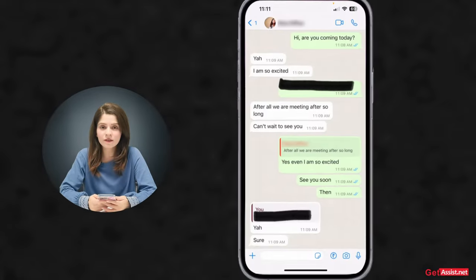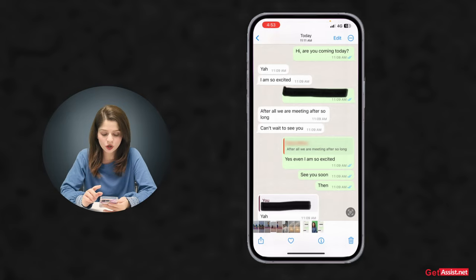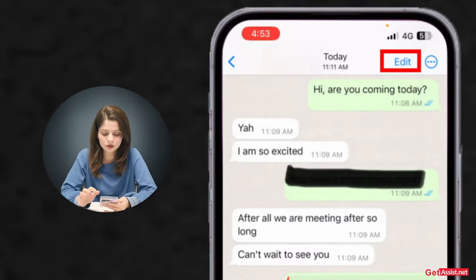So let's start the video. Here I have received a screenshot where some text has been blacked out, and now I will show you how you can edit it in your gallery and make it readable. First of all, you have to save the screenshot, then tap the edit option.